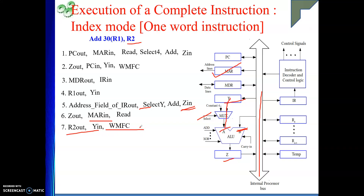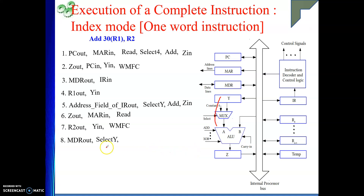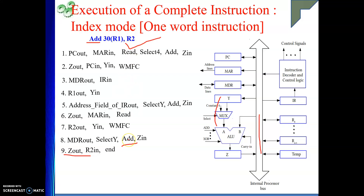We wait until the data comes from memory. After WMFC, data is in MDR. So MDR out — the operand is on the V input of the ALU — and R2 is in the Y register, so select Y. Then add; the result goes to Z register. In the next cycle, Z out, R2 in. End. For a single-bus index mode with a one-word instruction, by reading one word from memory pointed by PC we got everything, then proceeded with the execution.